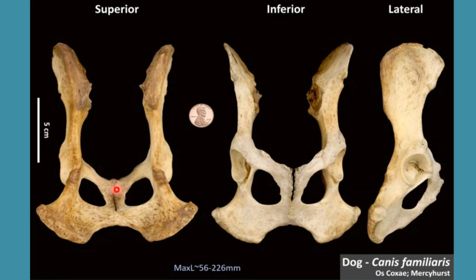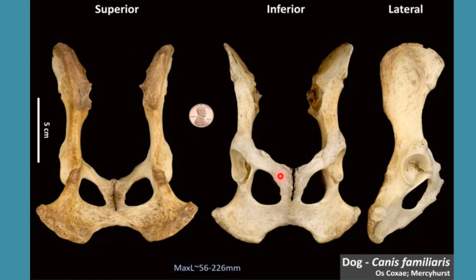The dorsal surface of pubis is smooth while the ventral surface is rough and slightly convex. The pubic symphysis is formed at the point where two pubic bones combine or meet, and this pubic symphysis helps in the formation of the pelvic symphysis. Pubis contains a body which is present just cranial to the obturator foramen, and two rami: the cranial ramus and the caudal ramus.